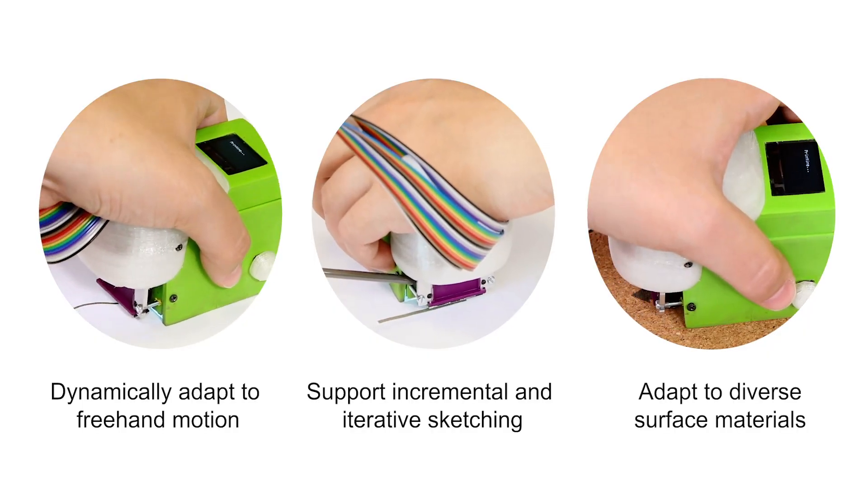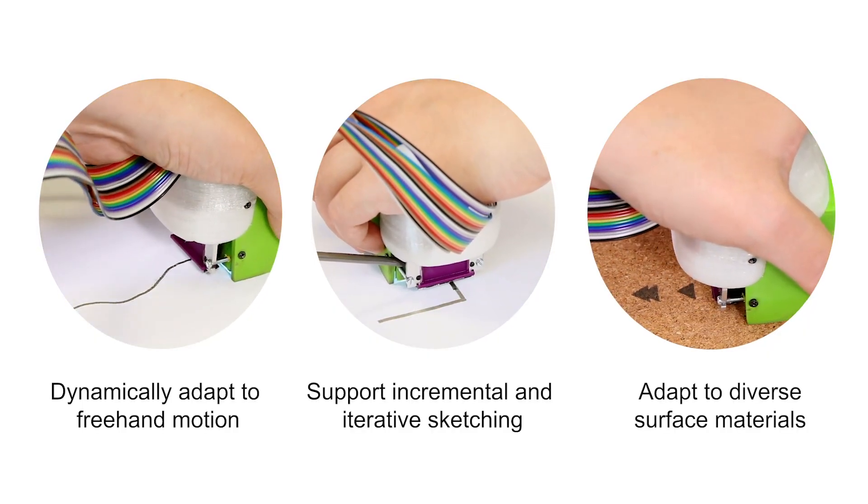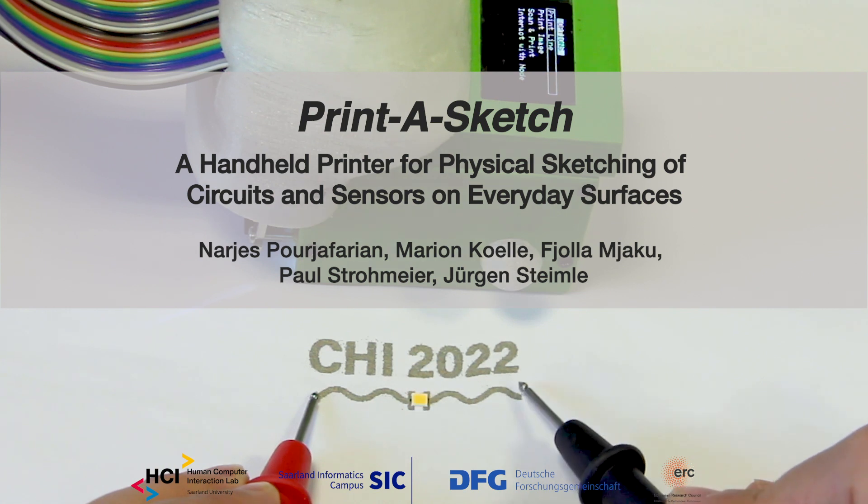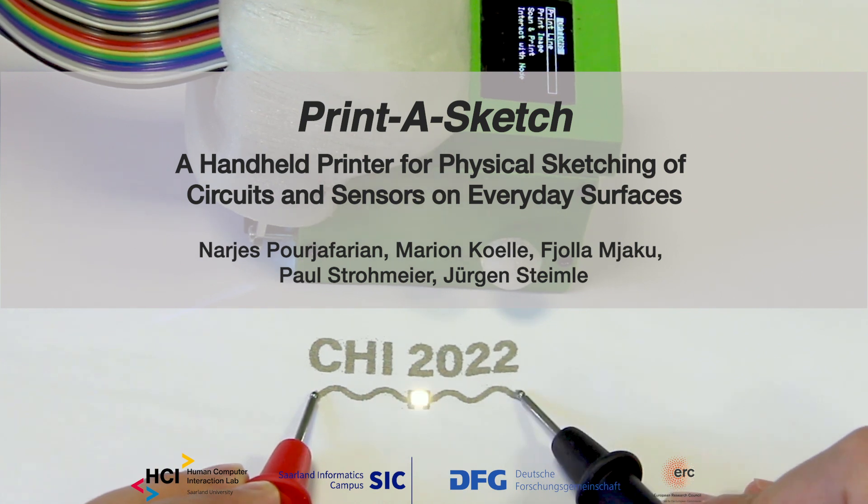To summarize, printed sketch combines desirable properties from manual sketching and computer-supported functional electronic printing that dynamically adapts to the user movement, prior sketch elements, and the surface material. Thanks for listening. I am looking forward to the discussion.